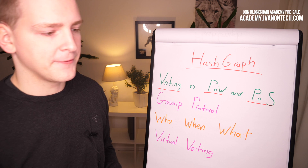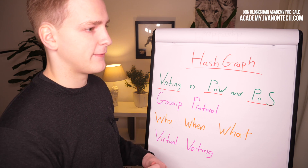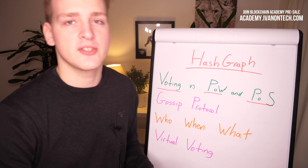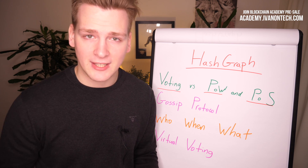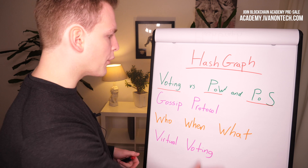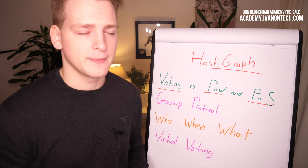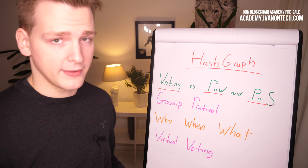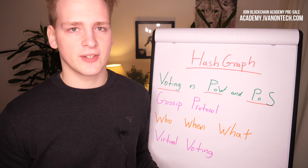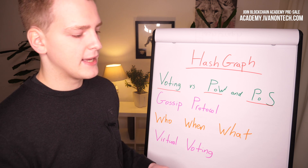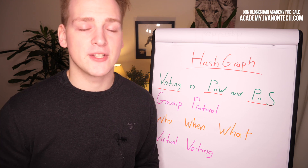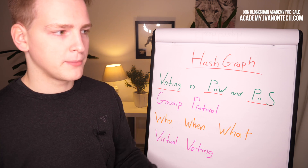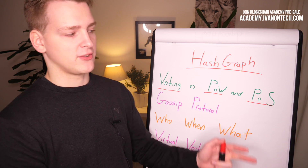In proof of stake, you and I lock up funds and vote for the next block. If we vote incorrectly — if we try to get some malicious transactions into the blockchain — we lose our locked-up stake. The disadvantage of proof of work is performance: we need to wait for miners to find the next block, propagate it through the network, and transactions are handled synchronously. Transactions sit in the mempool waiting with other transactions before being batched into a block together.